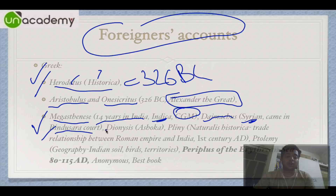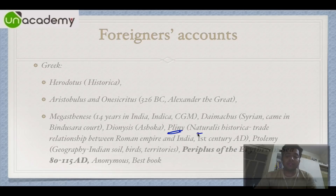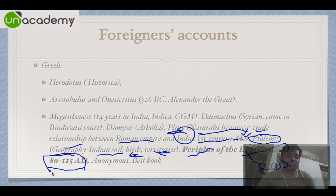Deimachus was a Syrian who came to the court of Bindusara, son of Chandragupta Maurya. Dionysus also came during this period. The Mauryan succession was: Chandragupta Maurya, then Bindusara, then Ashoka the Great. Pliny wrote Naturalis Historia, which discussed trade relations between the Roman Empire and India, written around the first century AD. Ptolemy wrote Geography, covering Indian soils, birds, and territory. The single most important book is Periplus of the Erythraean Sea — 'Erythraean' meaning red — written by an anonymous author around the first to second century AD, best explaining trade relations between India and Rome.